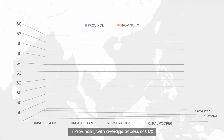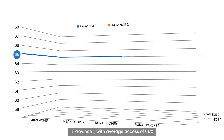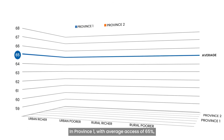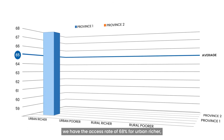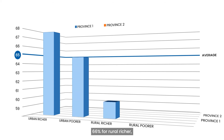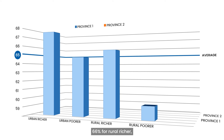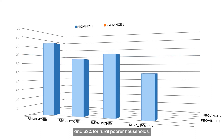In province one, with an average access of 65%, we have an access rate of 68% for urban richer, 65% for urban poorer, 66% for rural richer, and 62% for rural poorer households.